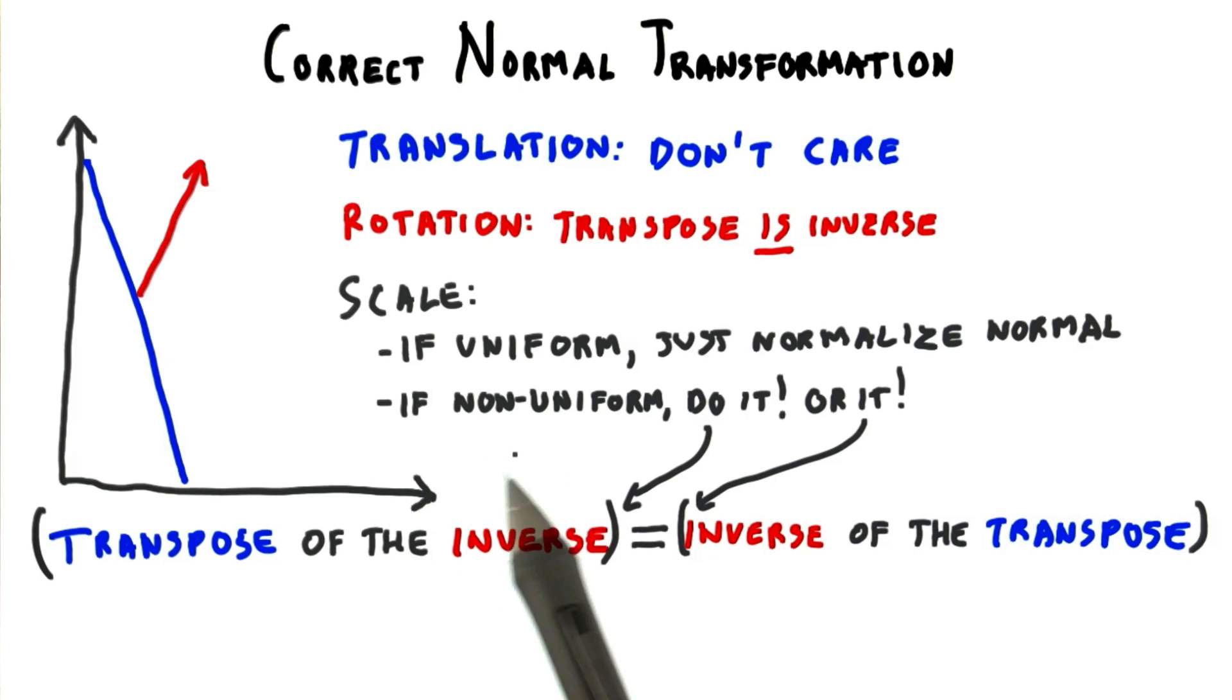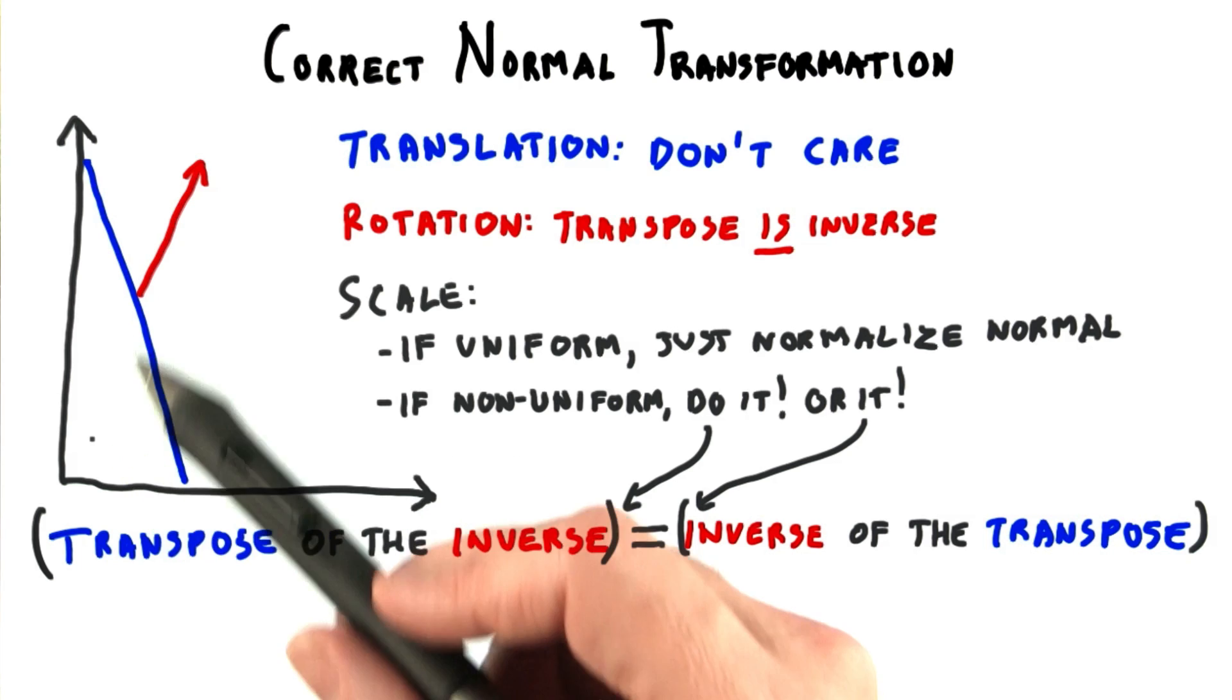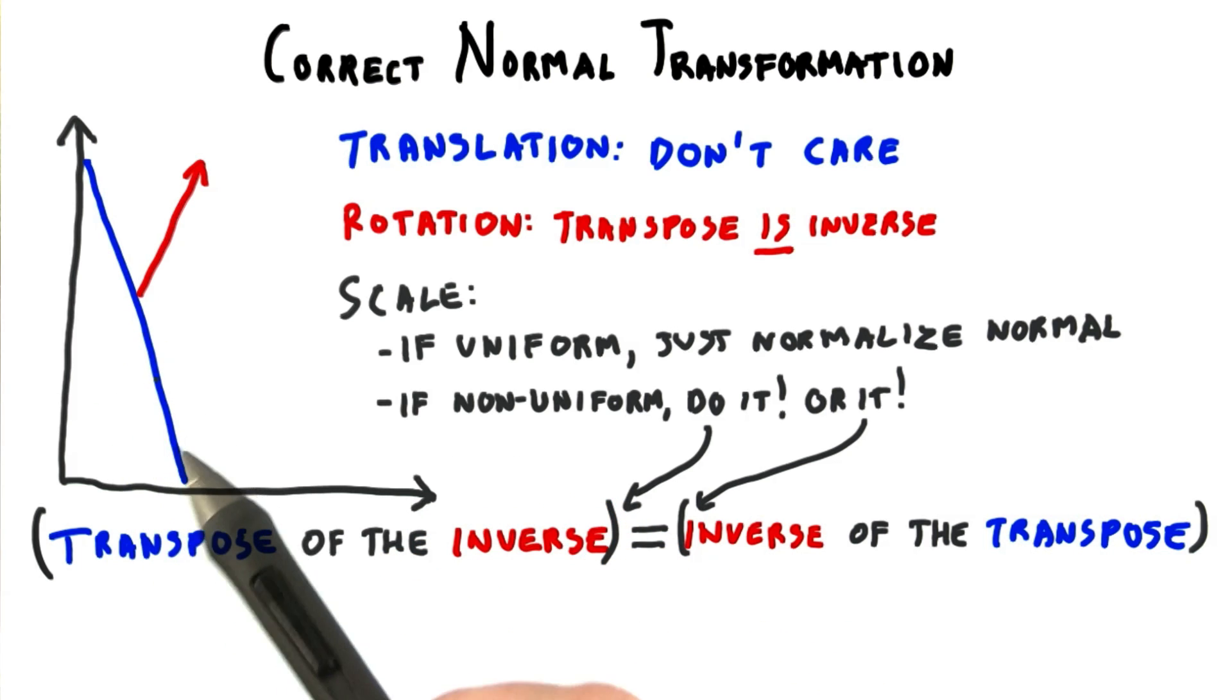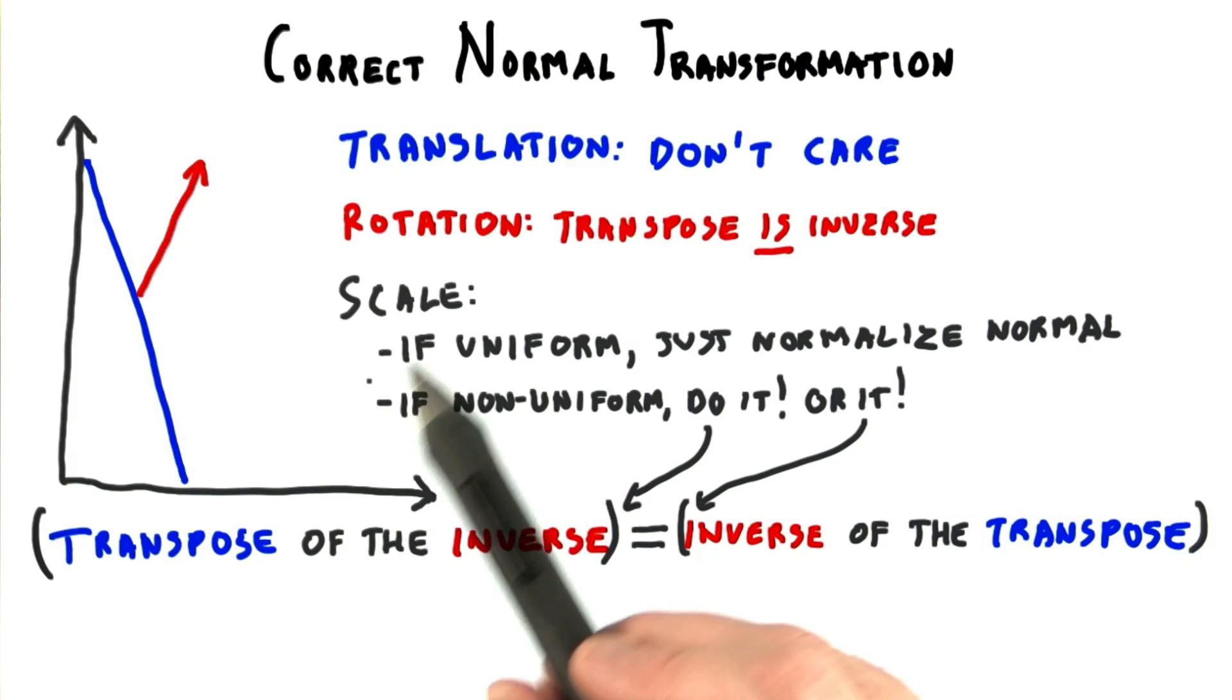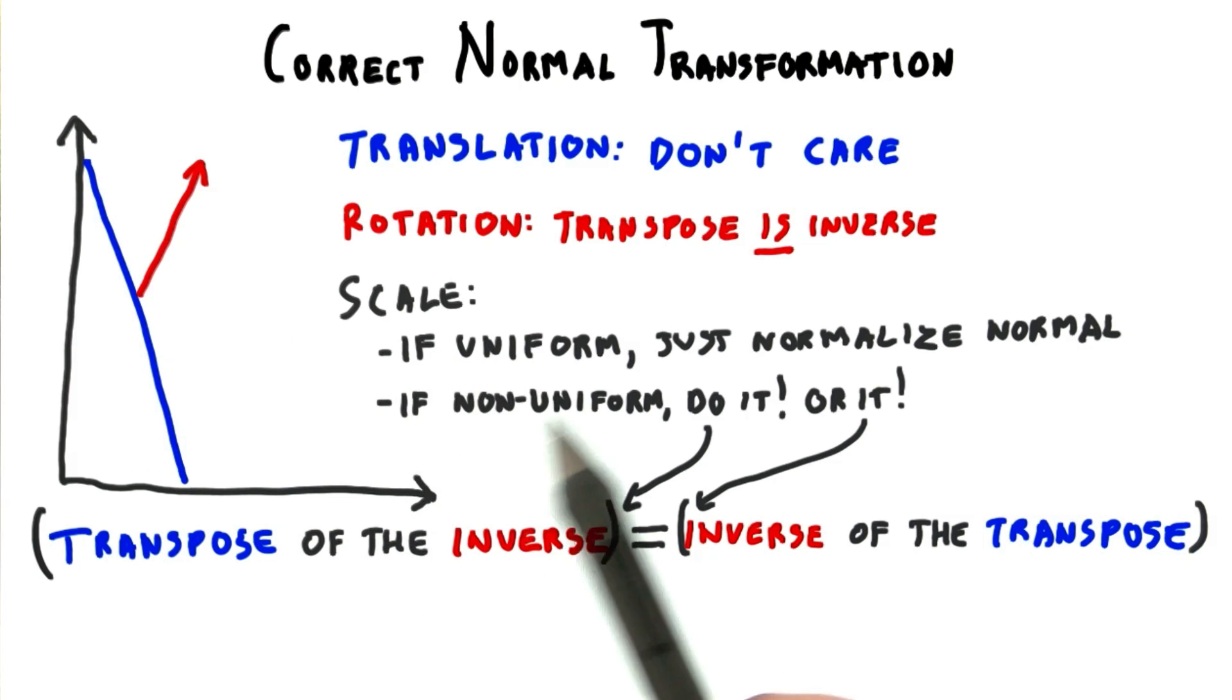If you keep away from non-uniform scaling matrices, you'll never run into this mismatch and can merely use the modeling matrix for both position and vector transforms. If you never use scales of any sort, you won't even have to renormalize your vectors.